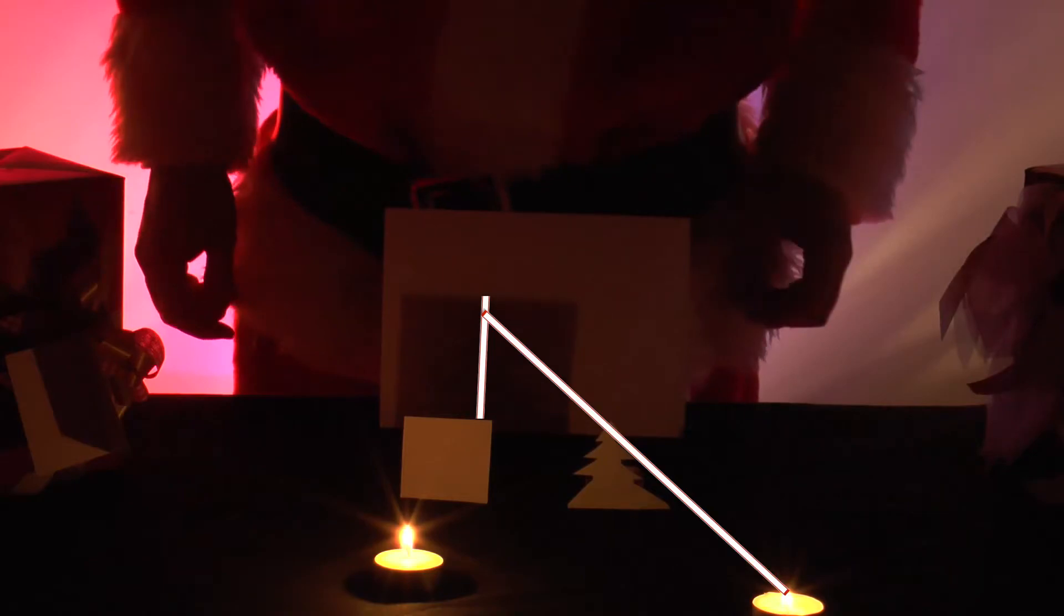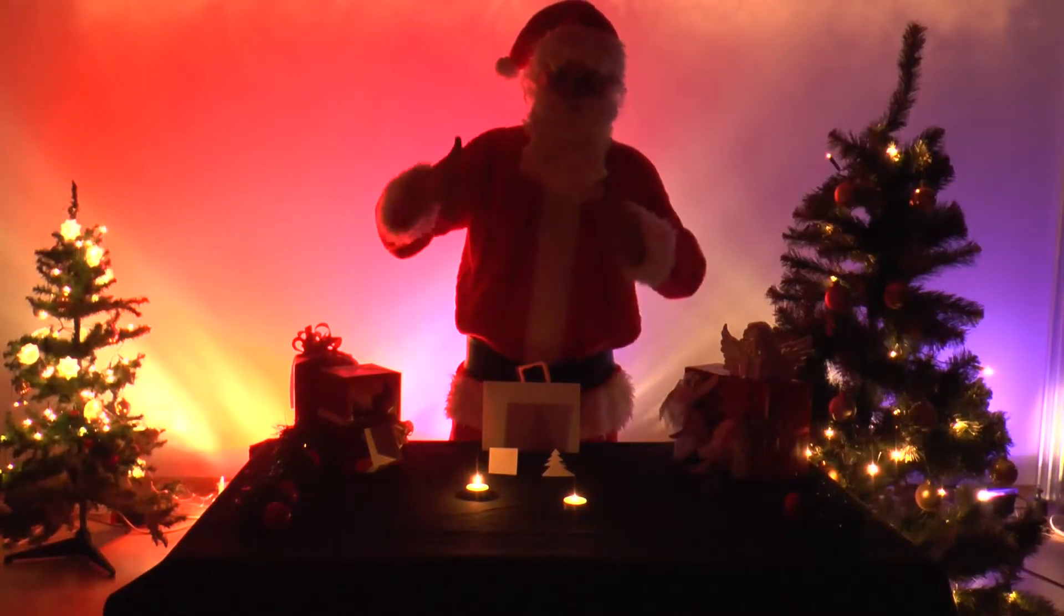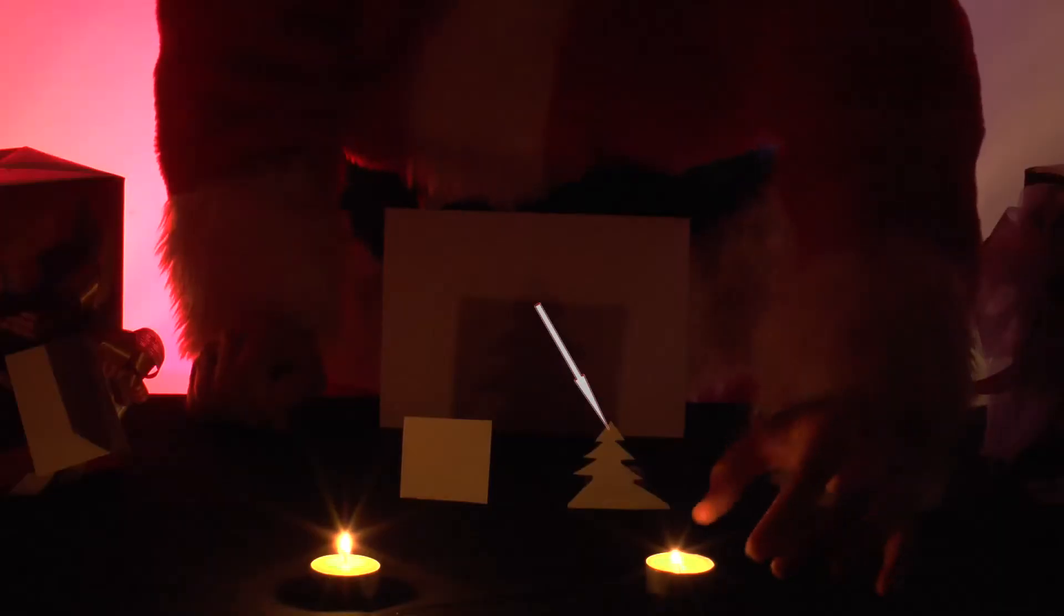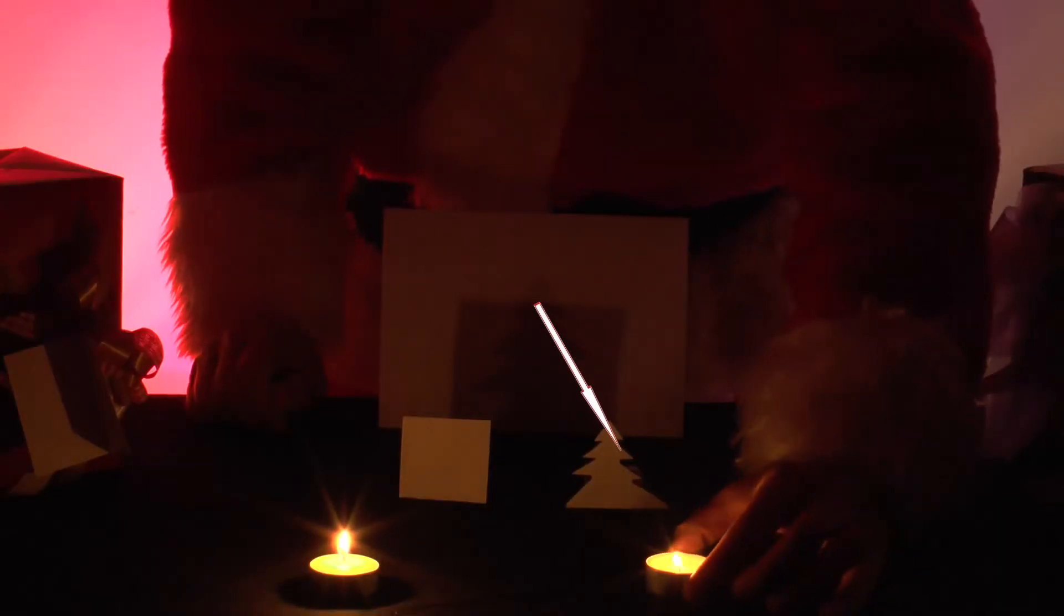Moving the second candle backwards and forwards will only change the size of the tree's shadow. There is exactly one position where the tree and the card shadow have the same height.